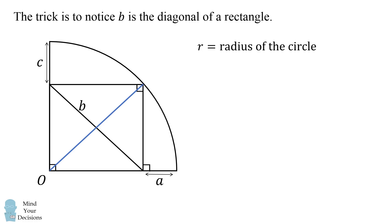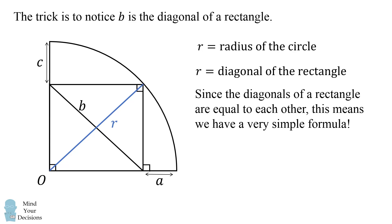Well, if we draw the other diagonal, we'll notice that it's exactly the radius of this circle. So r is also equal to the length of a diagonal of this rectangle. But since the diagonals of a rectangle are equal to each other, this means we have a very simple formula. We must have r is equal to b, and that's the correct answer. Did you figure it out?